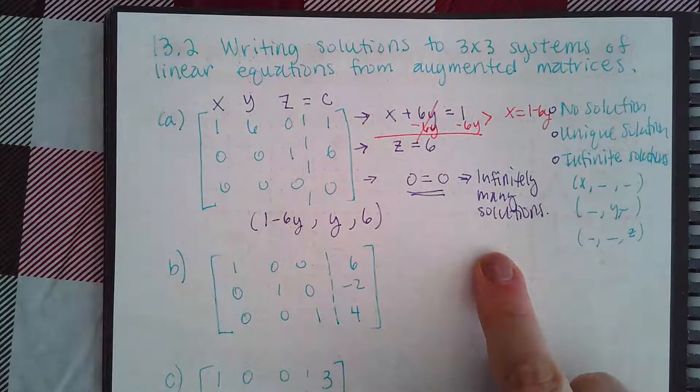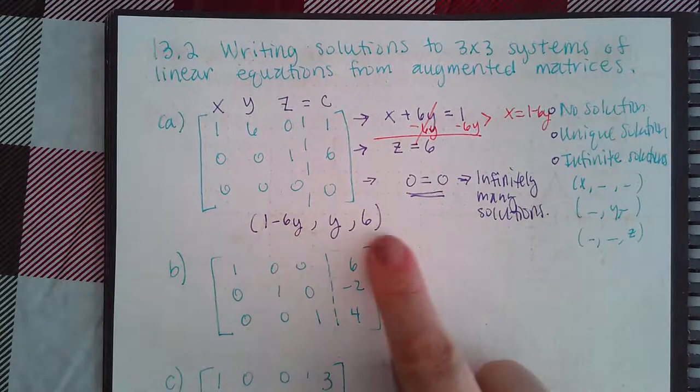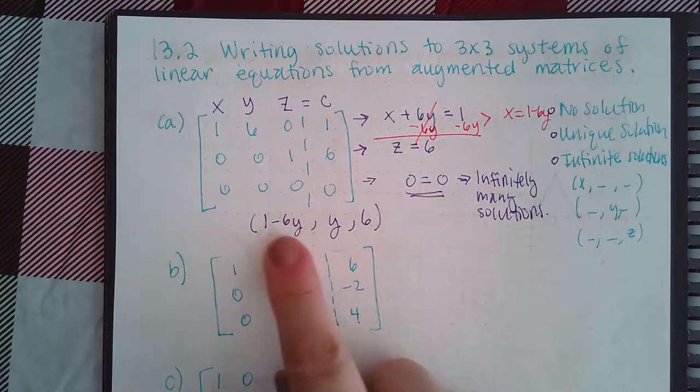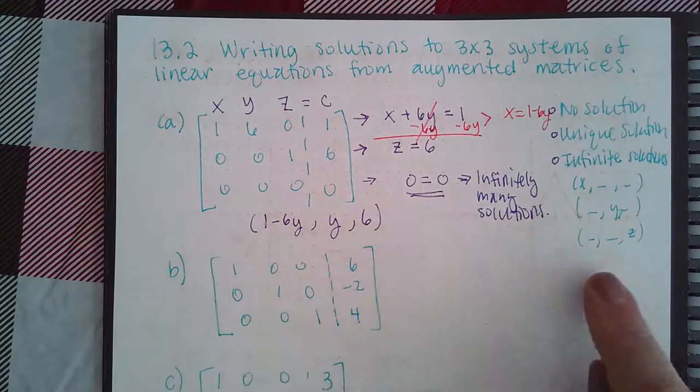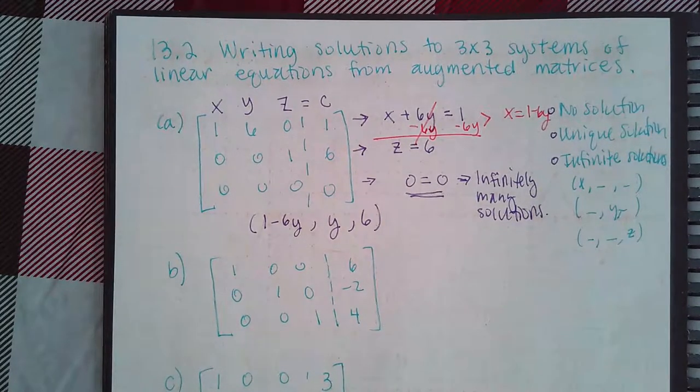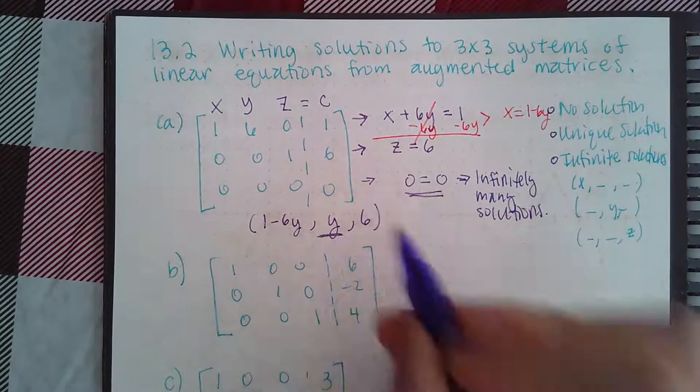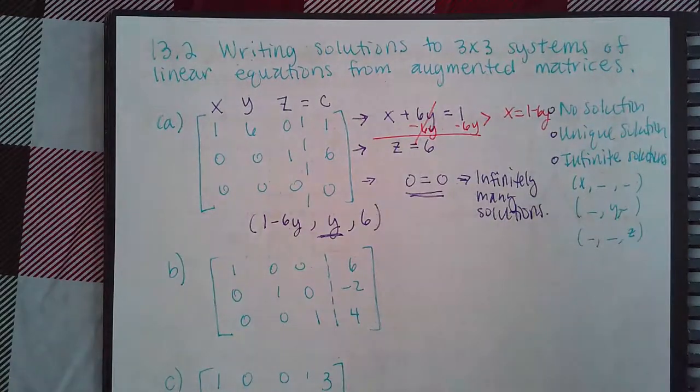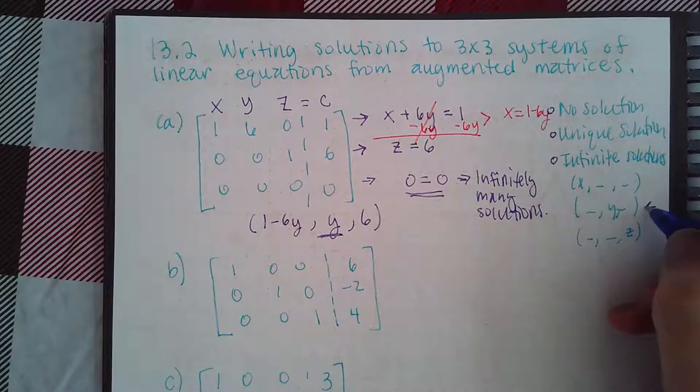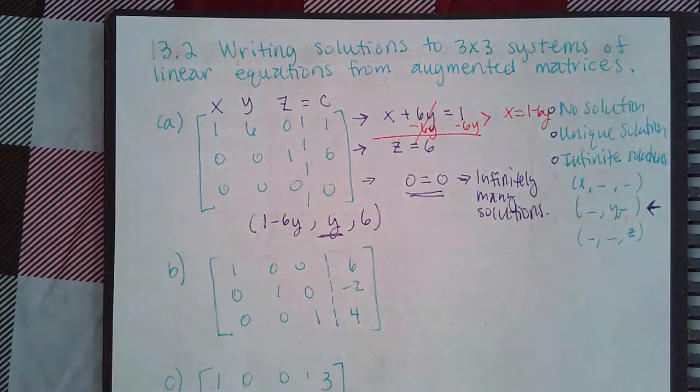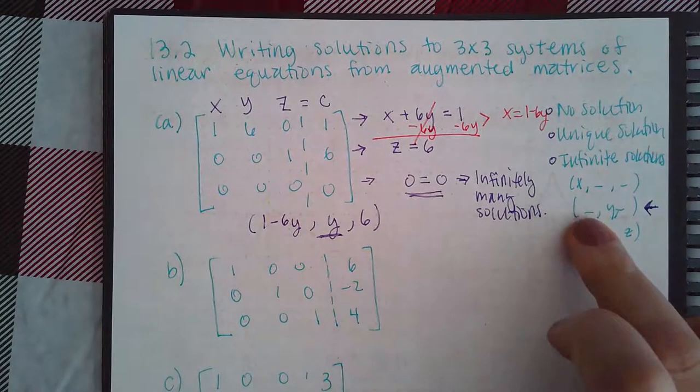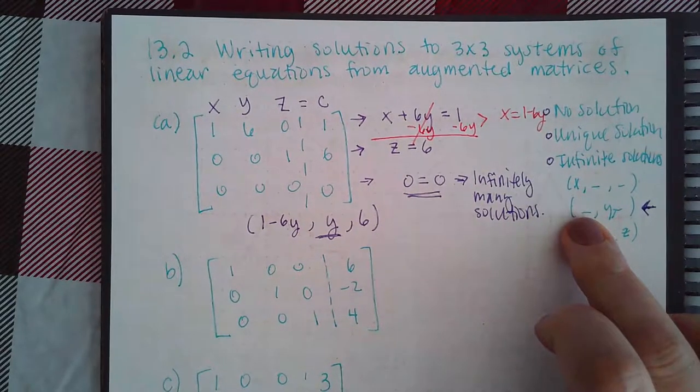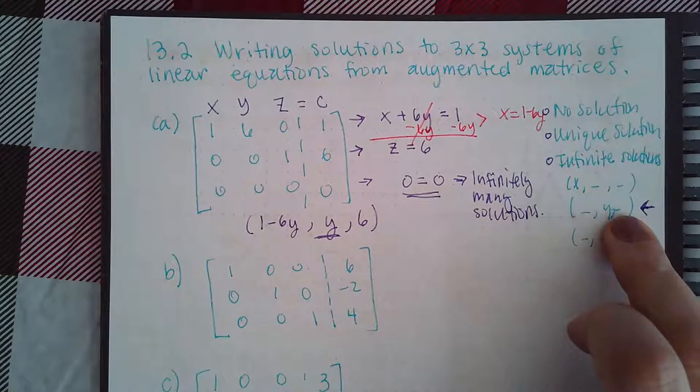But remember, you can pick anything as y, which is why there are infinite solutions. So there are infinitely many solutions here, but they'll all fit this pattern. Which variable do I have that's all by itself? This is the variable that I have all by itself, so then I'll be selecting this option here for part a. For x I would plug in 1 minus 6y, and then for z I would be plugging in 6.